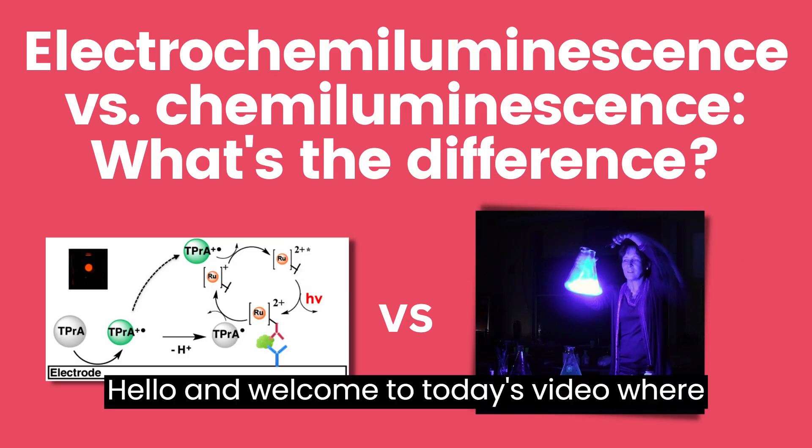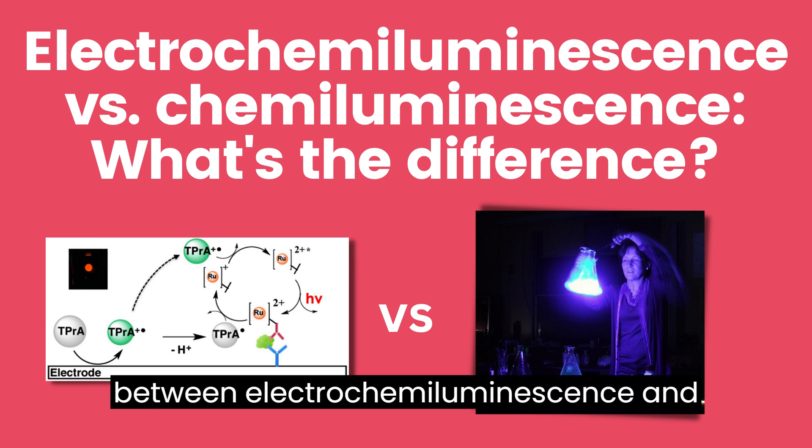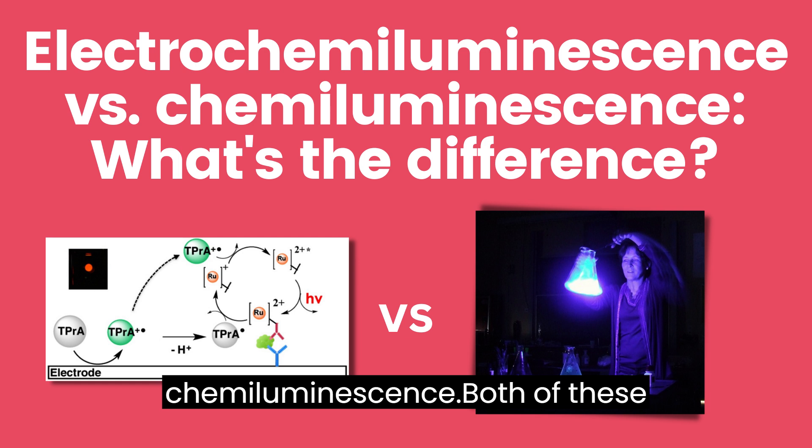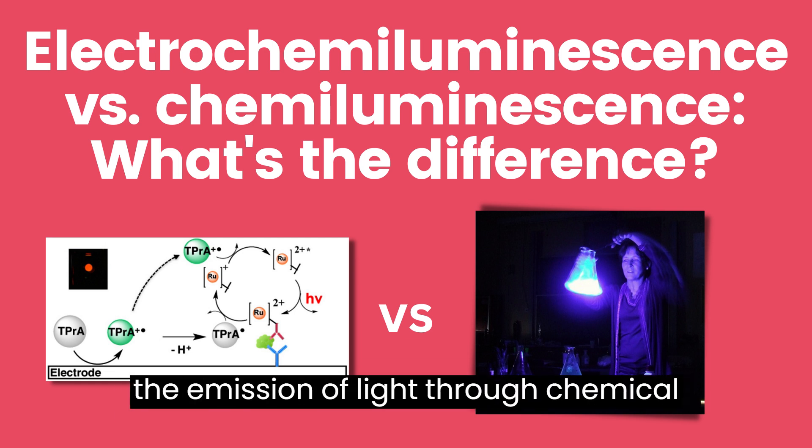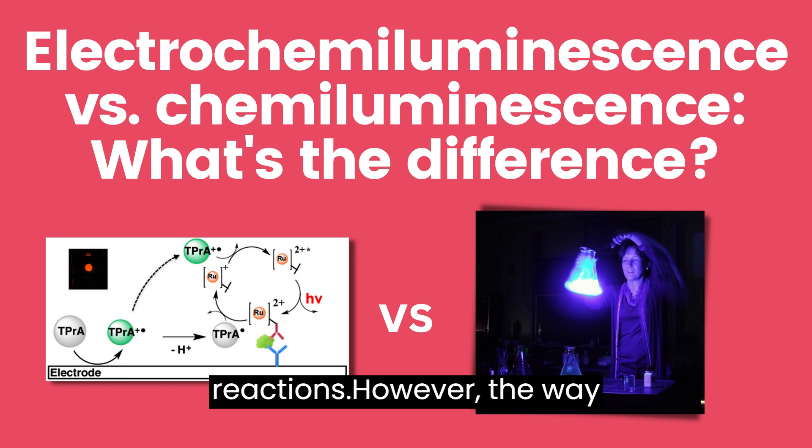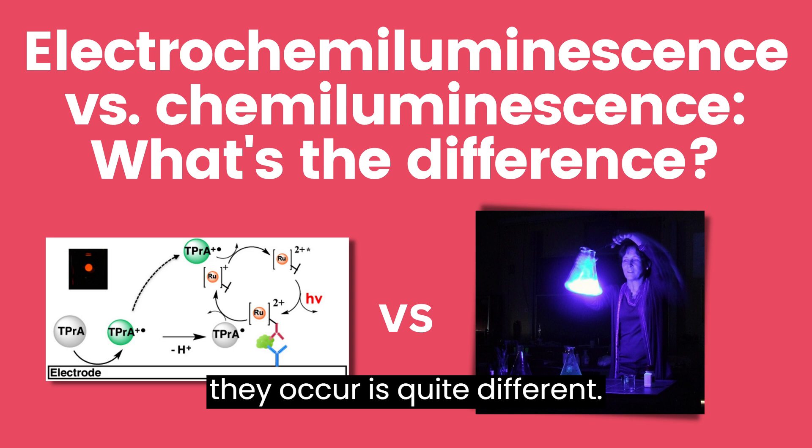Hello and welcome to today's video where we will be discussing the difference between electrochemiluminescence and chemiluminescence. Both of these are fascinating phenomena that involve the emission of light through chemical reactions. However, the way they occur is quite different. So let's dive into it.